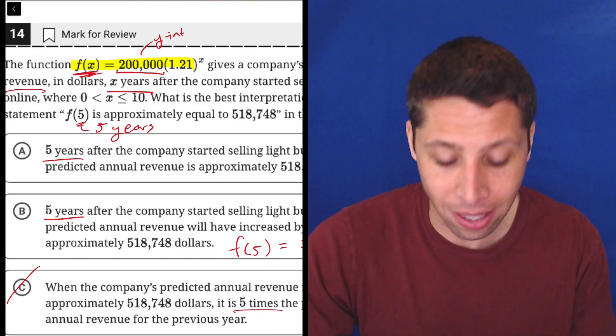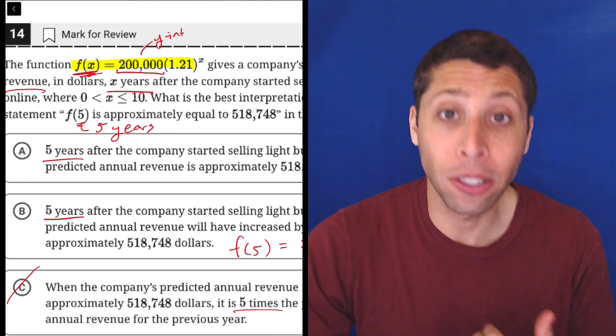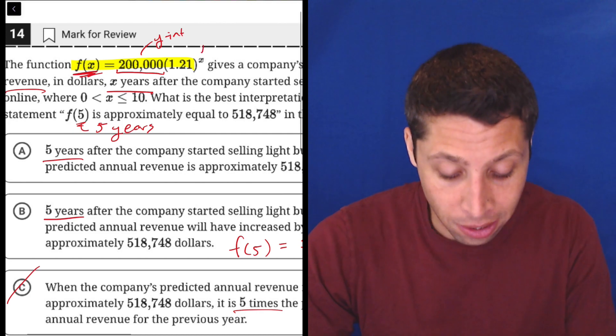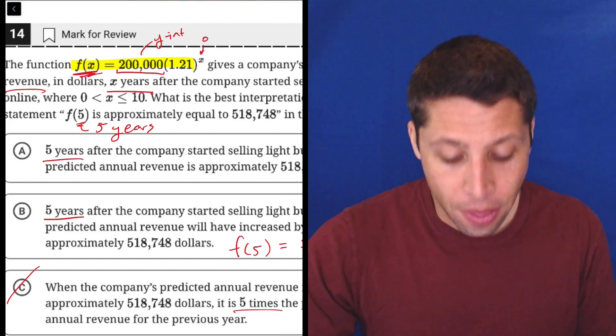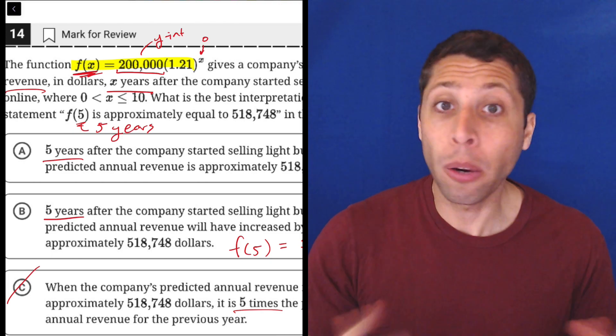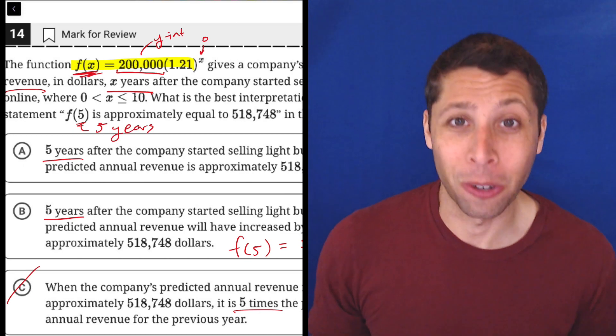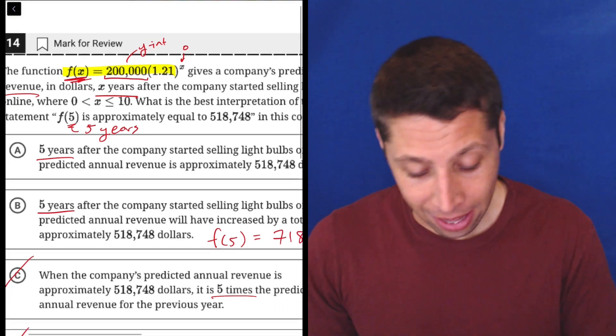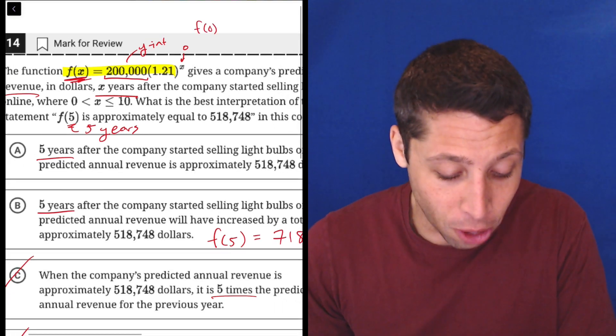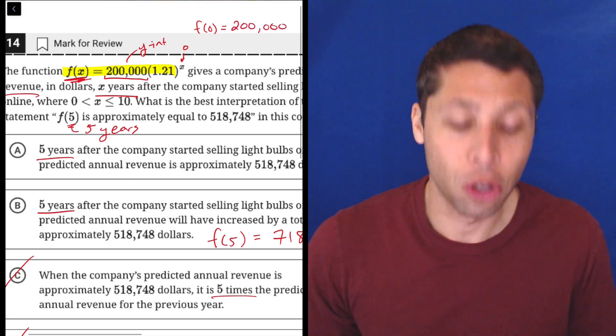And the reason I know that is think about what a y-intercept is. If you put in zero for x, the y-intercept is what you get. So if you put in zero for this x right here, then it's 1.21 to the zero. And any number to the zero is one. So we're just multiplying 200,000 by one, which is 200,000. So basically, that's a longer way of saying that f of zero in this equation is equal to 200,000.